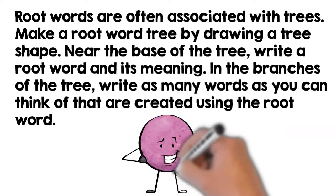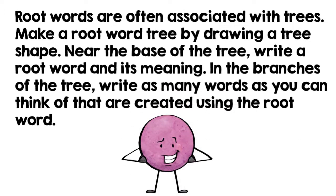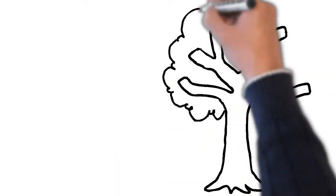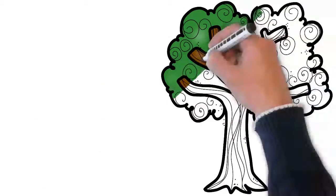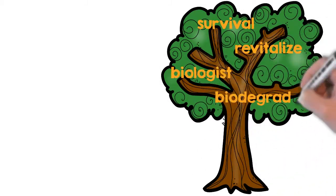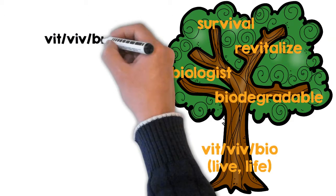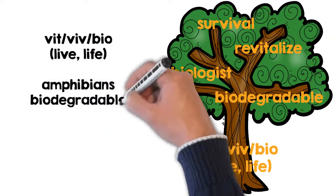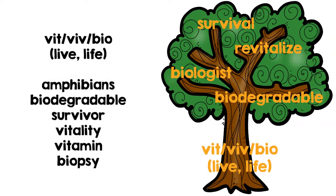Here is an example. The root word vit, viv, and bio mean live and life. Some words containing this root include survival, revitalize, biologist, and biodegradable. Pause the video to complete your organizer.